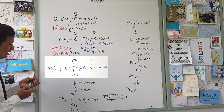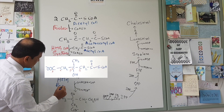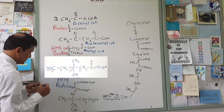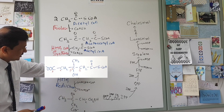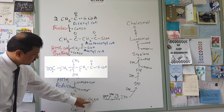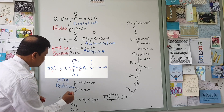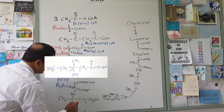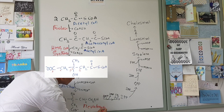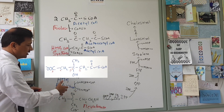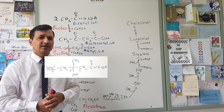This HMG-CoA then undergoes reduction carried out by the enzyme HMG-CoA reductase. Specifically, the keto group on the 5th carbon is reduced to an alcohol group (CH₂OH), and the resulting molecule is mevalonate. Mevalonate is the product of HMG-CoA reductase, which is the rate-limiting and rate-determining enzyme in cholesterol biosynthesis.